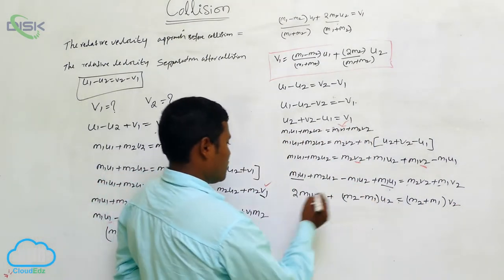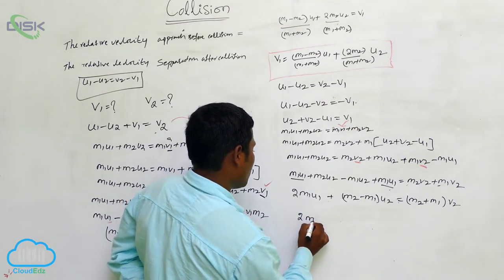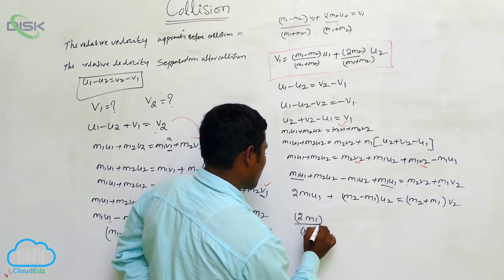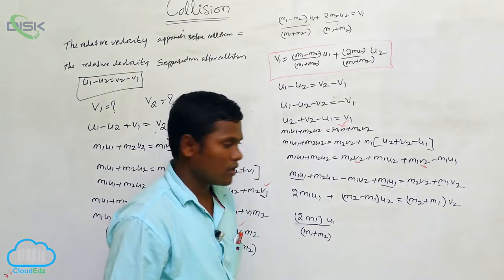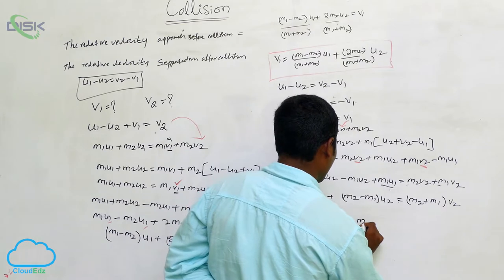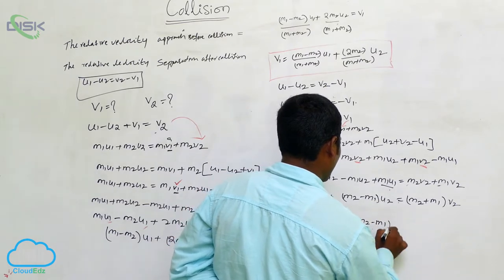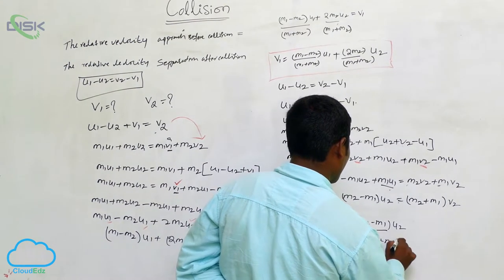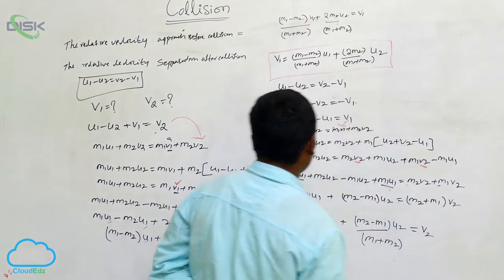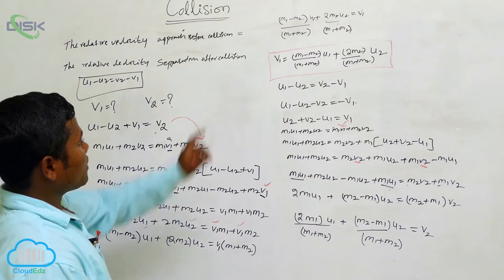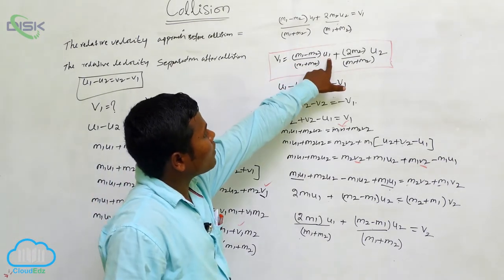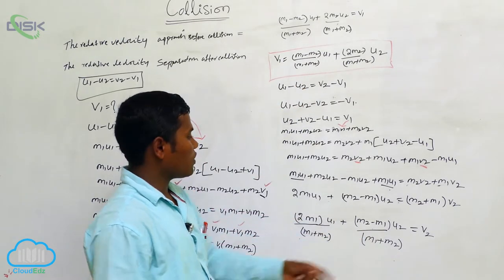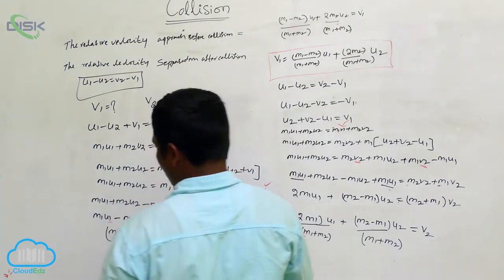So finally, what we can write? V2 is equal to 2 M1 divided by (M1 plus M2) times U1, plus (M2 minus M1) divided by (M1 plus M2) times U2. This is the final velocity V2. Notice the difference from V1: in the first term the coefficient is different, while in V2 the coefficient in front of U1 is 2M1 over (M1 plus M2).